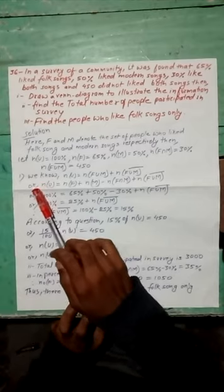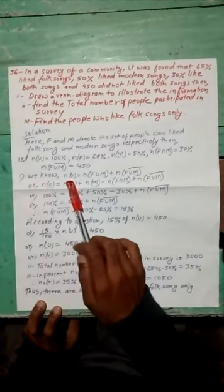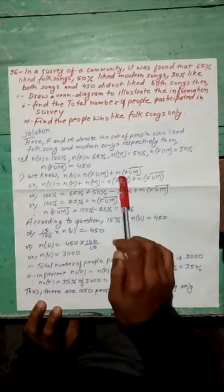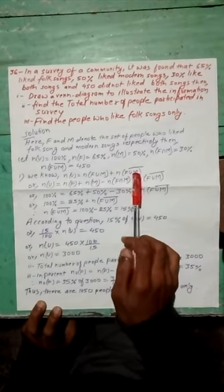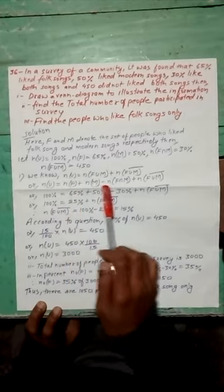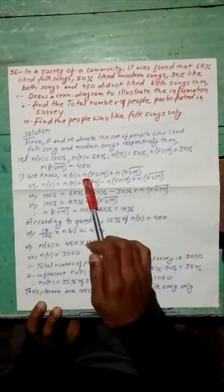We know that n(U) equals n(F union M) plus n(F union M complement). We know that n(U) equals n(F) plus n(M) minus n(F intersection M) plus n(F union M complement).